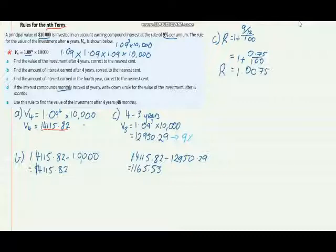So we could think of it as 9 divided by 12 divided by 100. 9 divided by 12 is 0.75, so 0.75 over 100. So the rate of change there is going to be 1.0075.